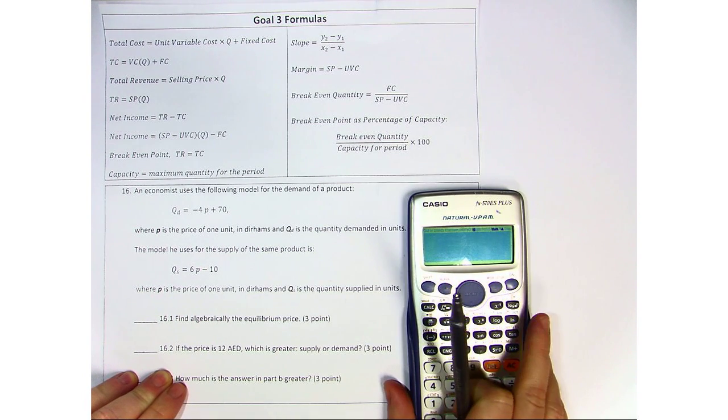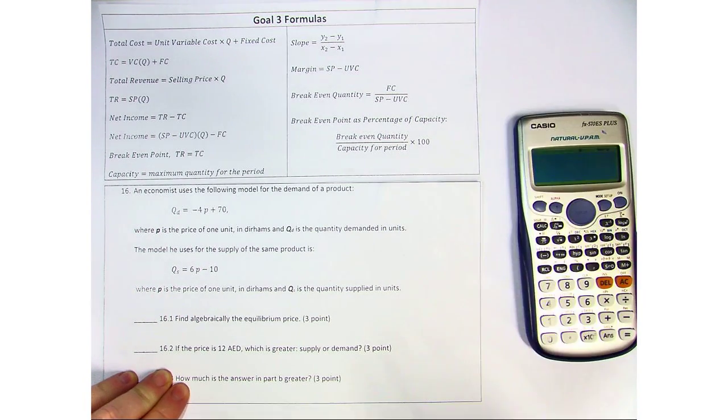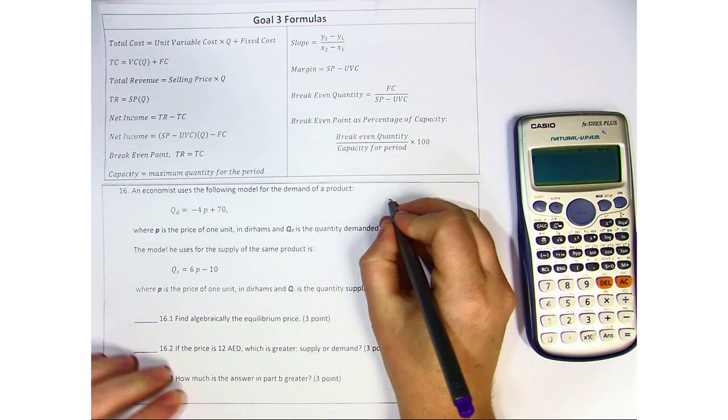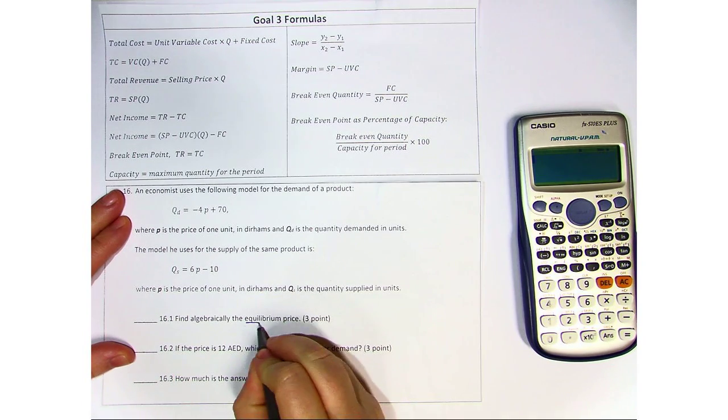The first part says find algebraically the equilibrium price. Now in order to do this, you have to set them equal.